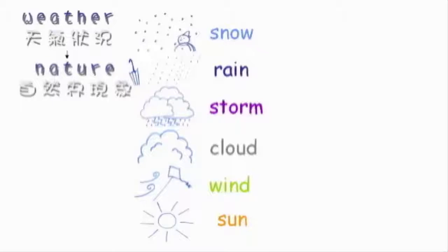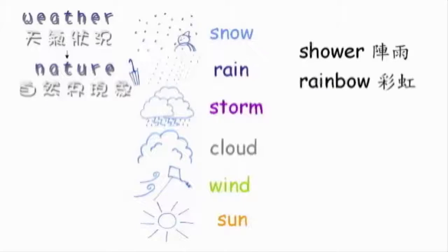Sun（太陽）。關於下雨，除了 rain 之外，還可以用 shower 這個字形容陣雨。放晴之後天空可能會出現 rainbow（彩虹）。還有很重要的一個單字，typhoon，是我們在夏季常遇上的台風。